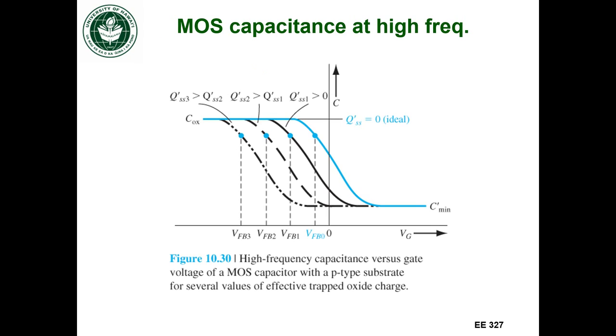So here's how it's going to affect the capacitance. The blue curve is the ideal case where this was accumulation, we go into depletion, and this is the high frequency inversion part. So the blue curve was the ideal case where we had no charge in the oxide.